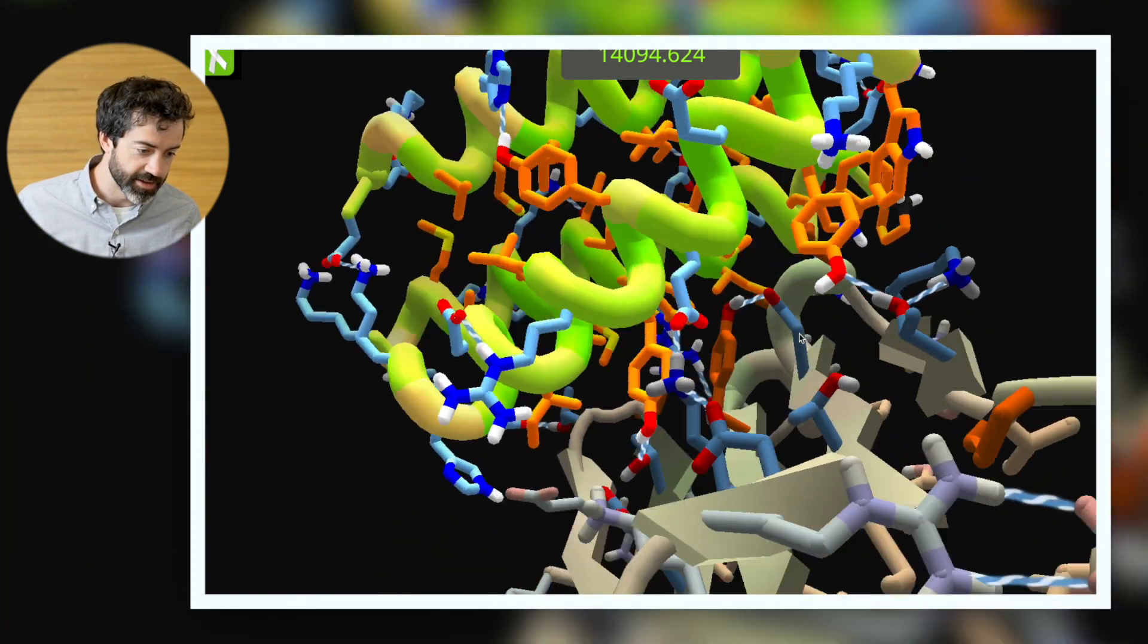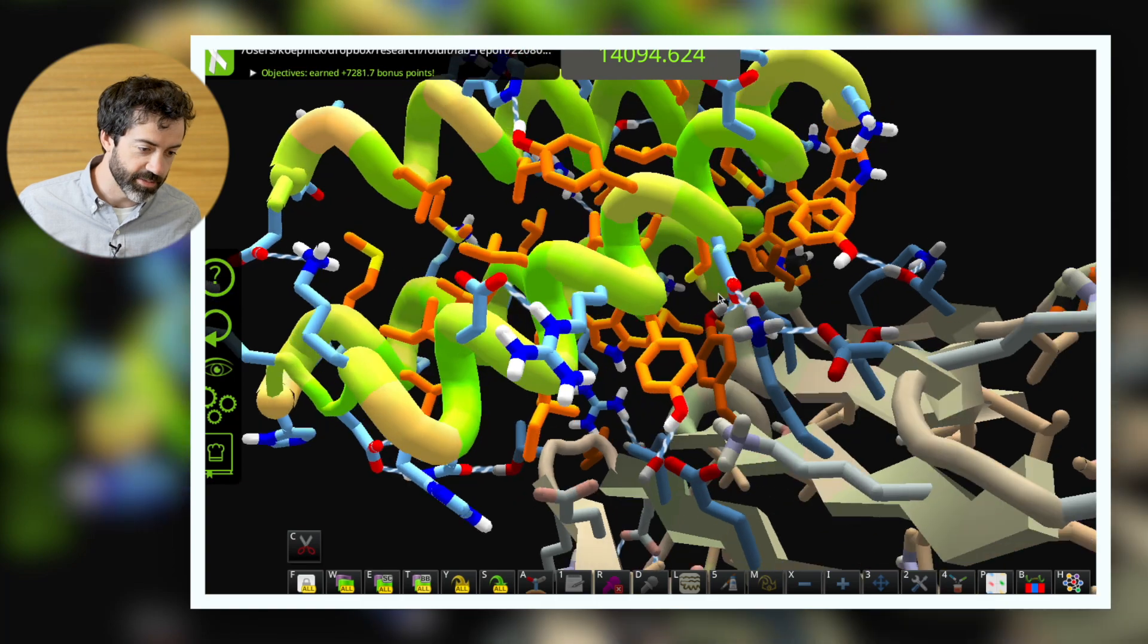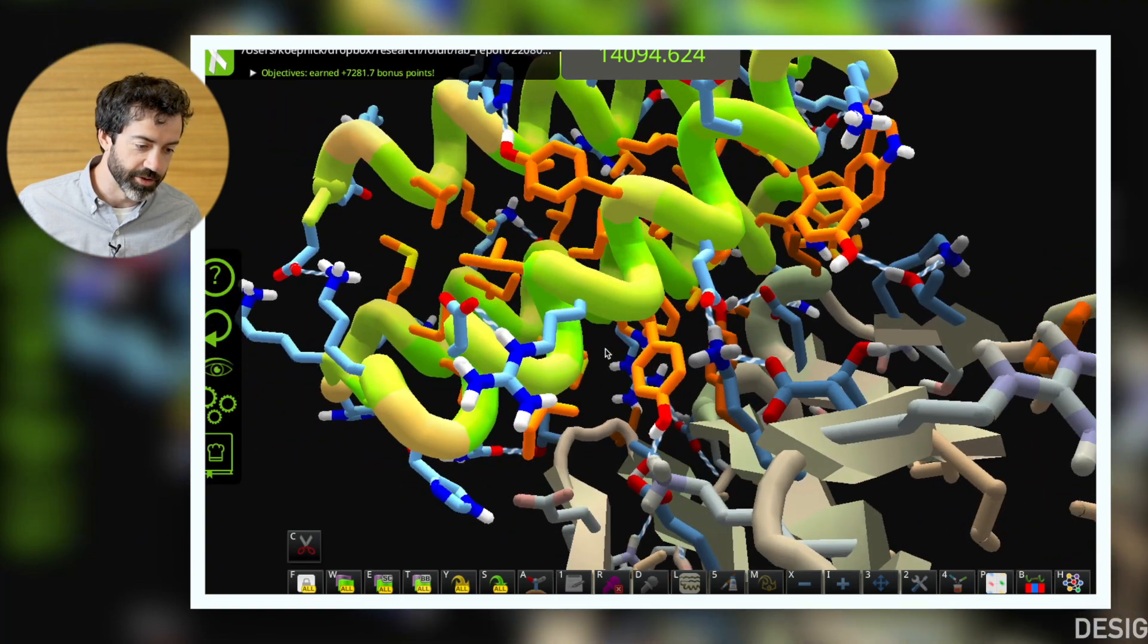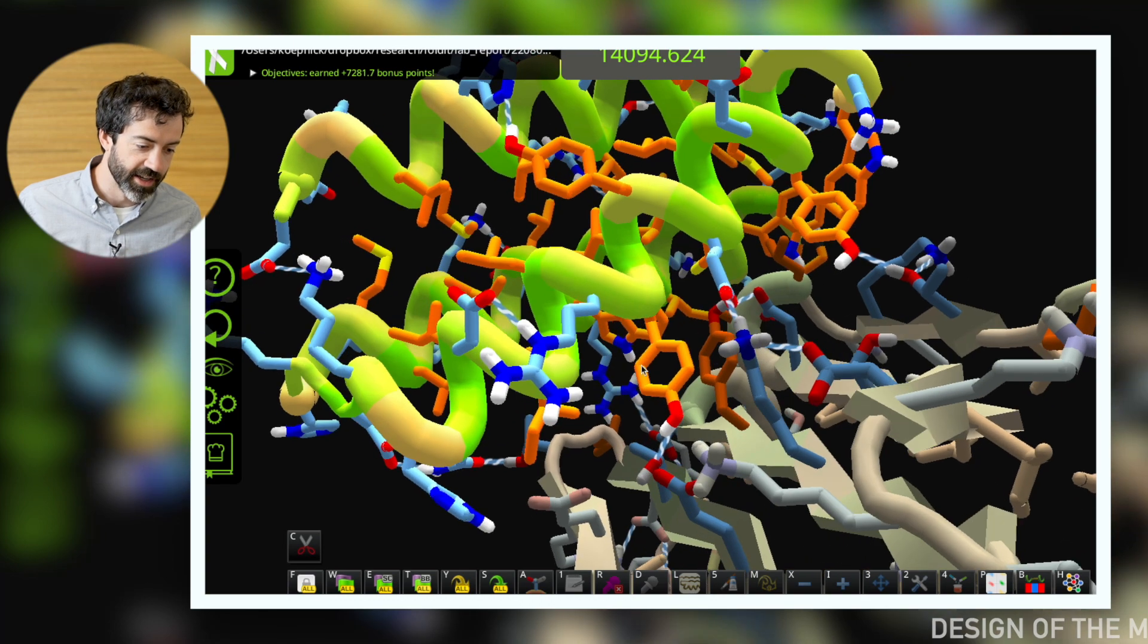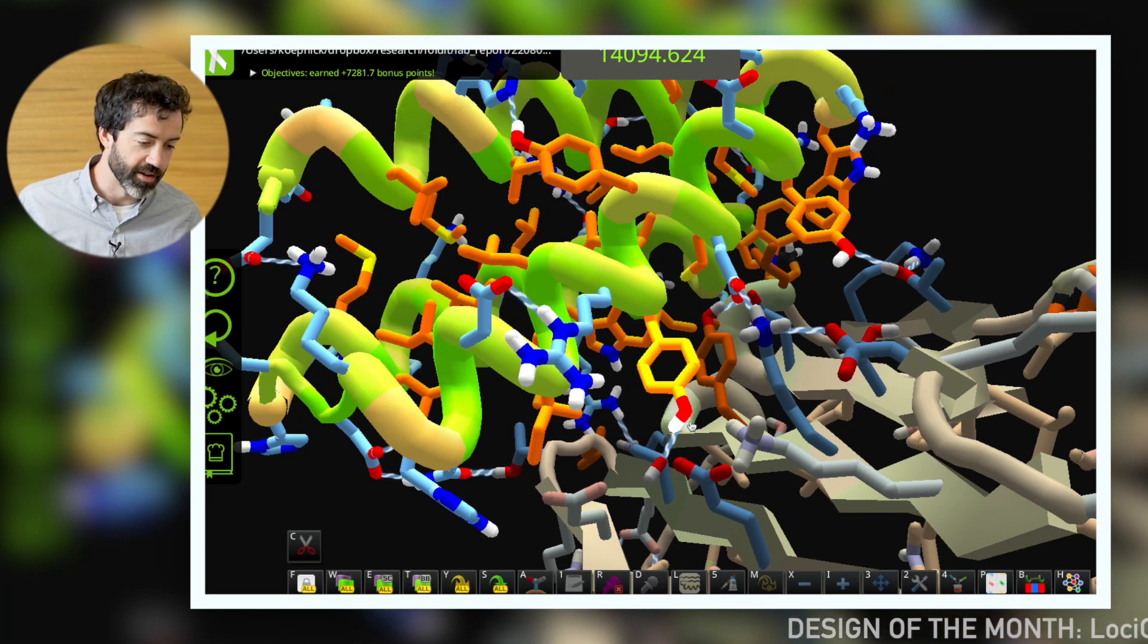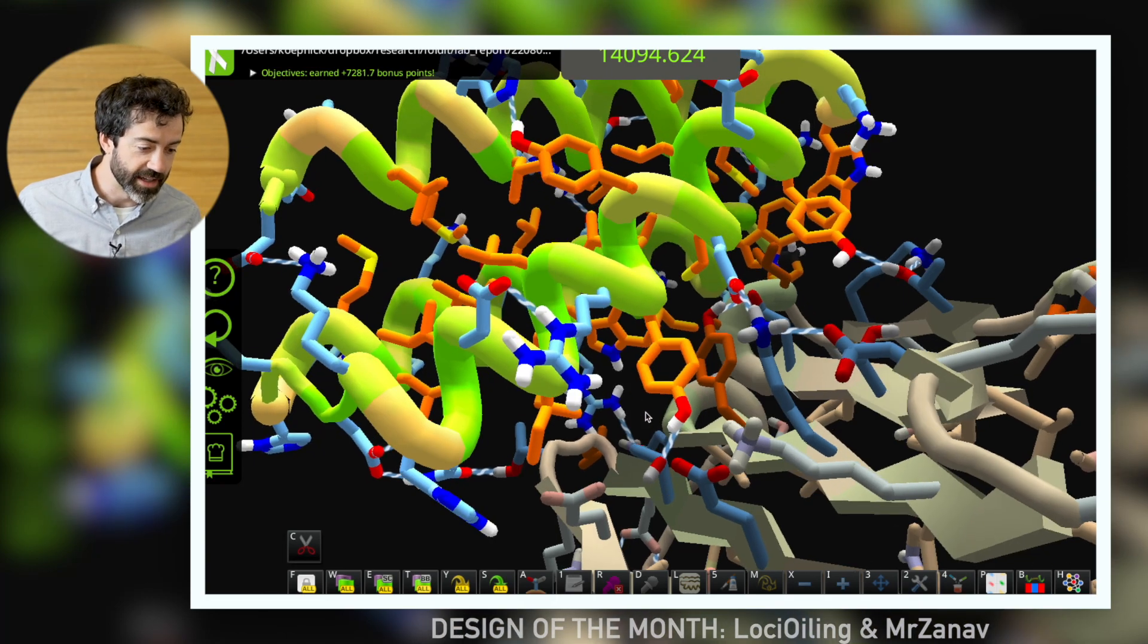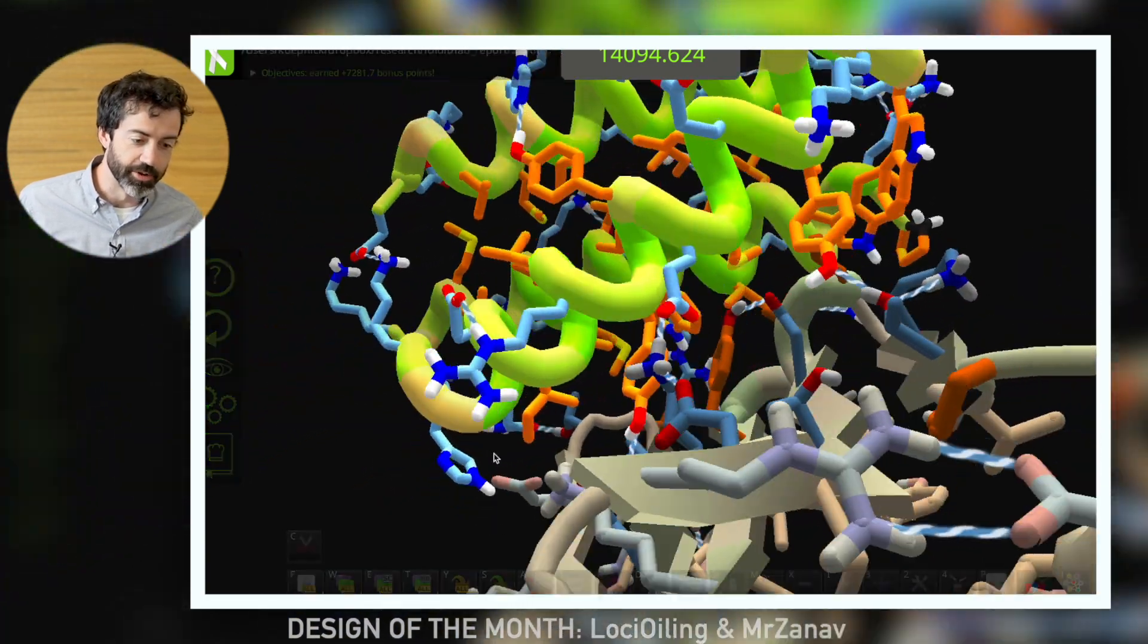I also like this tyrosine here, which packs pretty nicely against another tyrosine in the target. So this looks like a good packing interaction. And furthermore, this hydrogen bond on the binder side making a contact with the target may give us some specificity bonuses here.